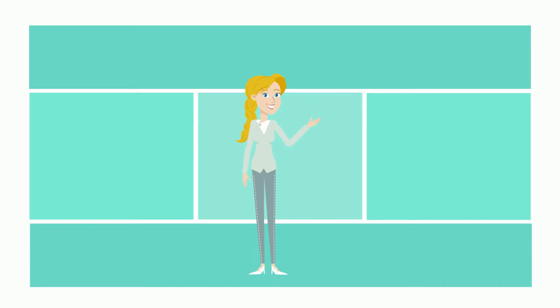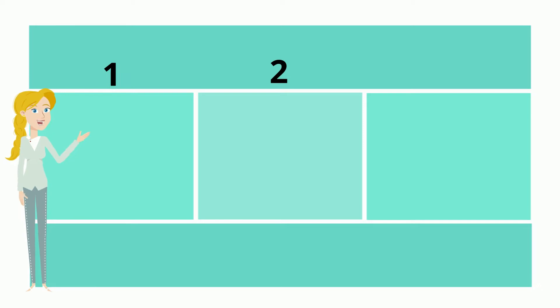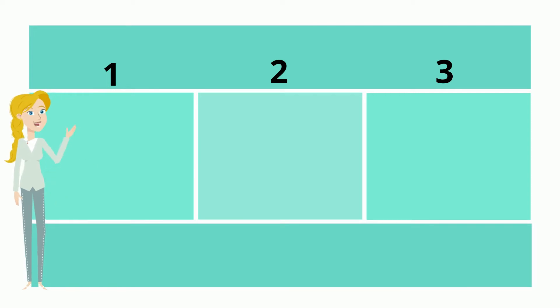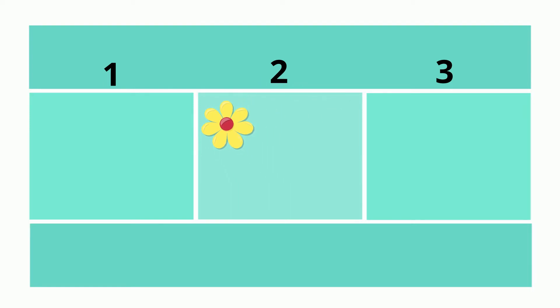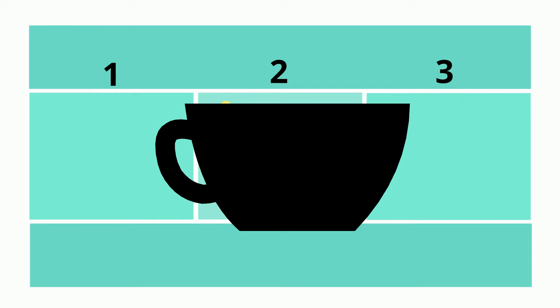Let's play a game to help us practice counting syllables. If a word has one syllable, we'll put it in this box. If it has two syllables, we'll put it here. Or three syllables, we'll put it in the final box. We will start with flower — say it slowly. Flower. How many syllables? Two. Cup — say it. Cup. How many syllables? Just one.